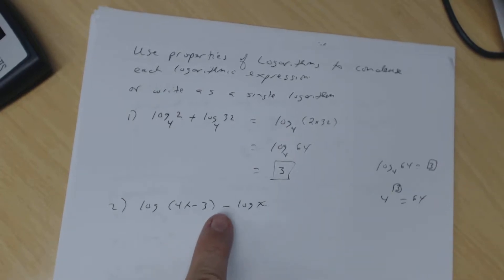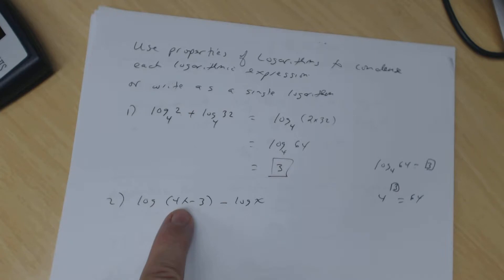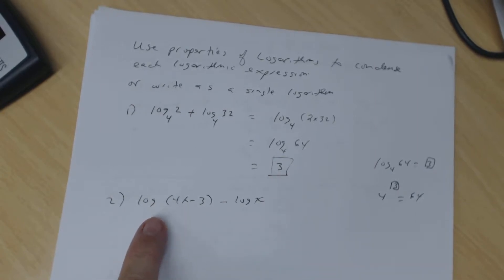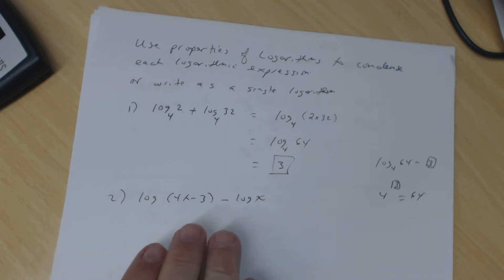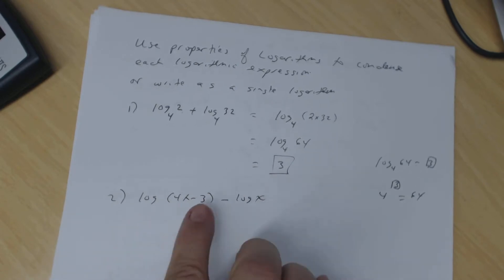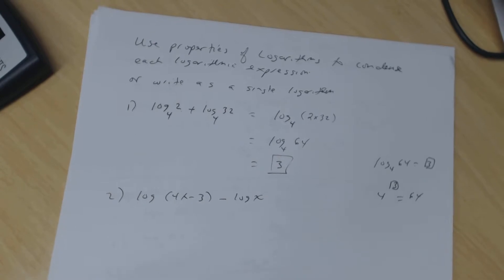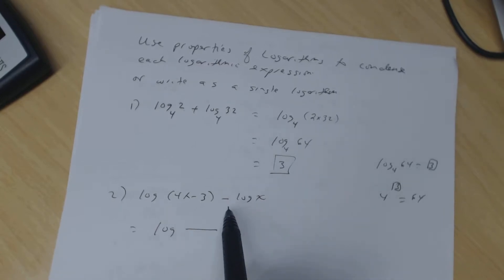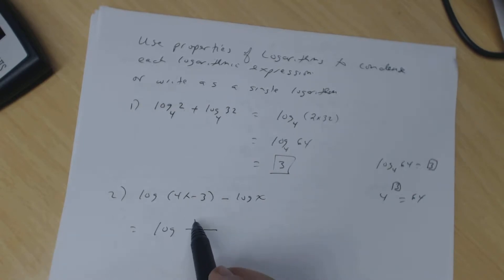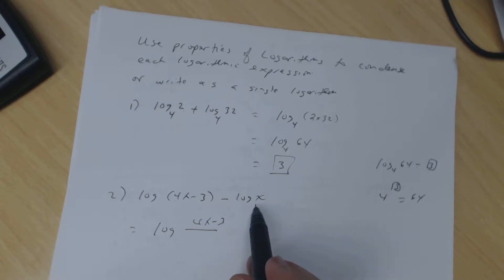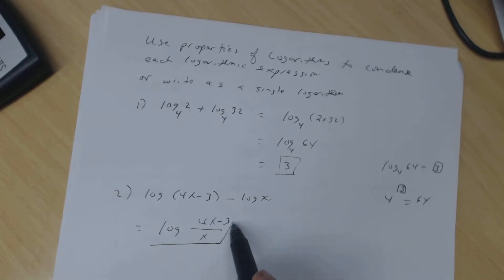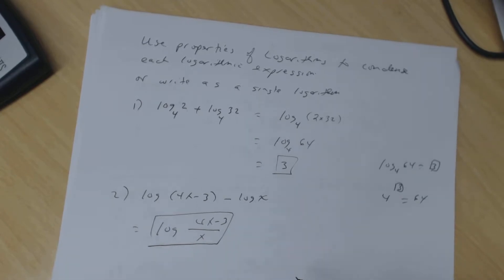We're dealing with the difference of two logs. The argument here is 4x minus 3, the argument here is x. The bases are the same, so I can condense this into a single logarithm. The difference of two logs is the log of the quotient — the numerator is the first argument, the denominator is the second. So the answer is log of (4x minus 3) divided by x.